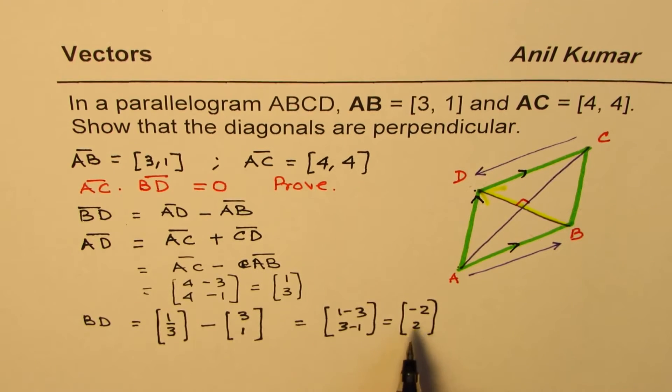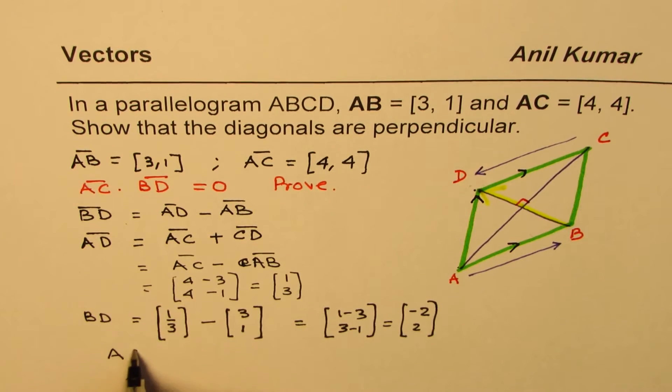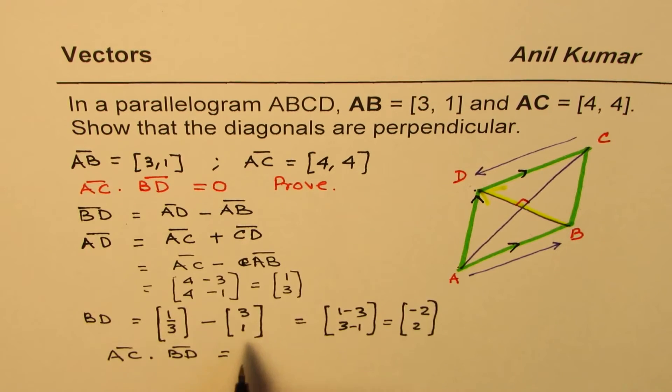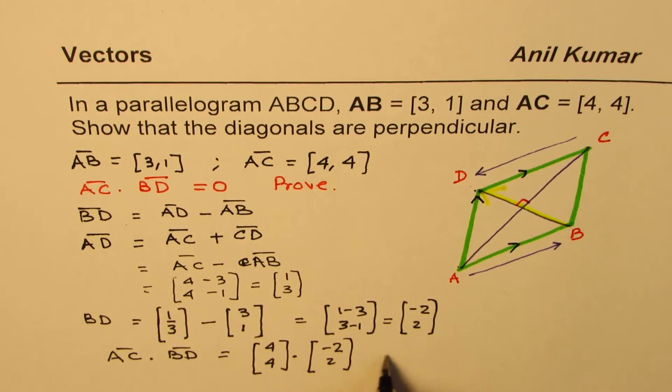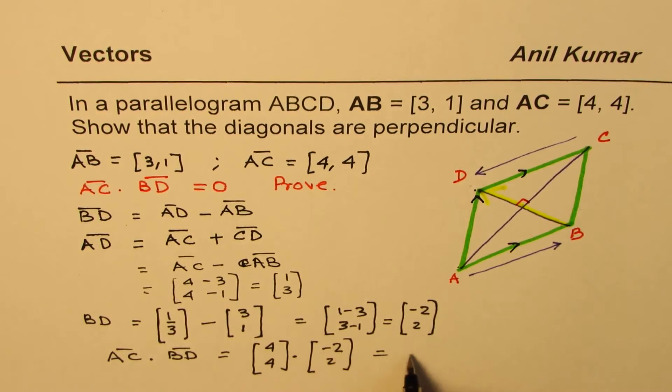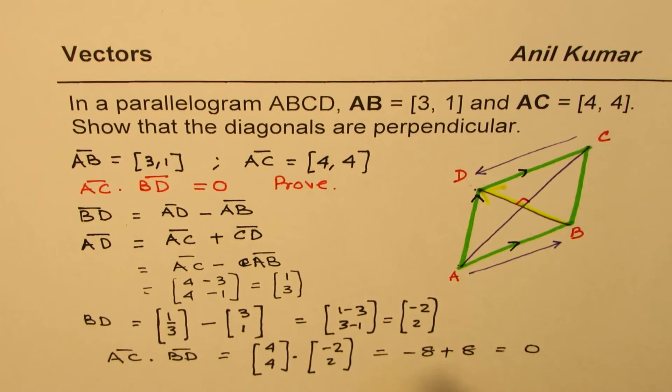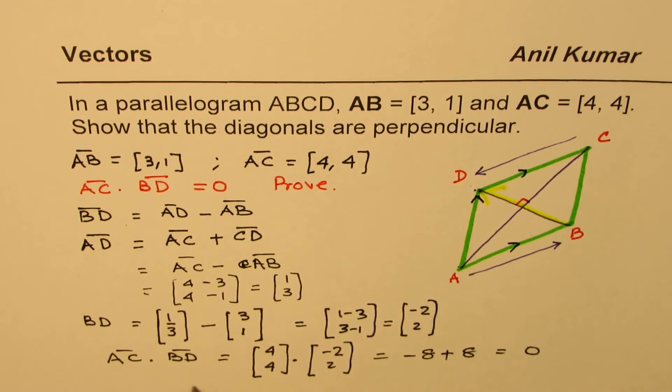Now, once we have BD, and we also know what AC is, we can find the dot product. So what is AC dot BD? So A to C is [4,4] dot BD, which is [-2,2]. And the dot product will be, just multiply, minus 8 plus 8, that is 0. Since the dot product is 0, we know they are perpendicular.